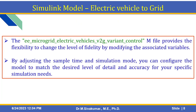The second M-file, called WEMicroGrid VariantControl, is a control script file that provides the flexibility to change the level of fidelity by modifying the associated variables. By adjusting the sample time and simulation mode, you can configure the model to match the desired level of detail and accuracy for your specific simulation needs.